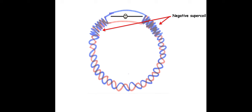The job of both gyrase and topoisomerase 4 is to remove negative supercoiling and introduce positive supercoiling. Too much coiling, or overcoiling, is known as negative supercoiling. Similarly, when the strands are undercoiled, it is said to be positive supercoiling. So the job of gyrase and topoisomerase 4 is to remove negative supercoil and introduce positive supercoil.